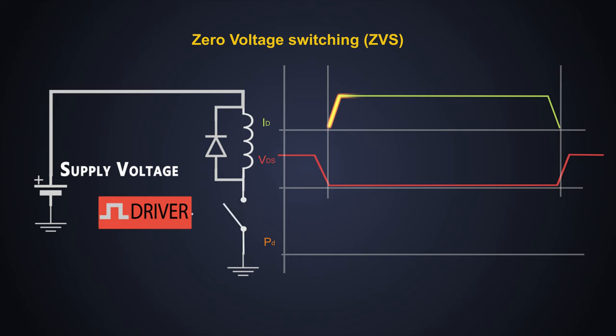And while turning off, we slow down the rise of VDS so that there will be minimal overlap with the drain current. This would be the pseudo state for zero voltage switching.